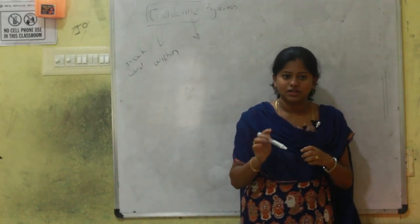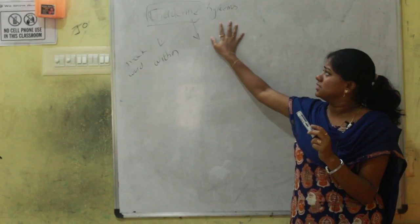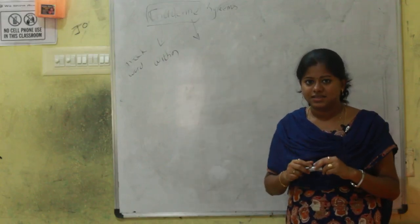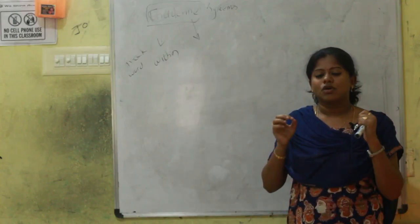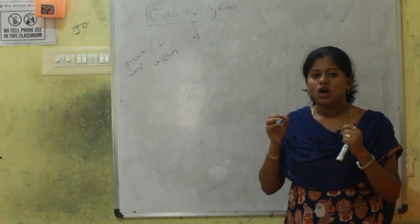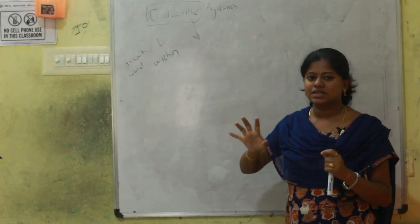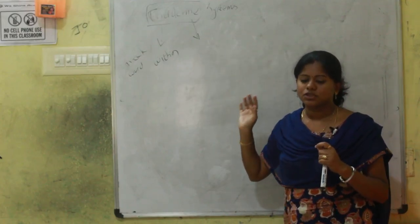The endocrine system consists of glands. All the glands that produce hormones are present in this endocrine system. We call this totally as the endocrine system.